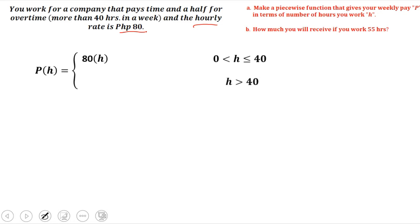But if you work more than 40 hours, you have overtime pay. To compute your weekly pay, take your regular rate — that's 80 times 40, because we have 40 hours in a week — plus your overtime pay, which is time and a half of your hourly rate. So that's 1.5 times 80, then multiply that by the number of hours minus 40.